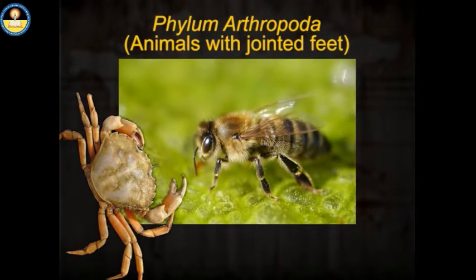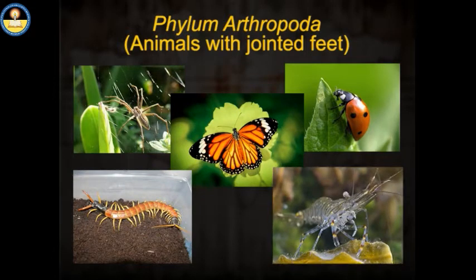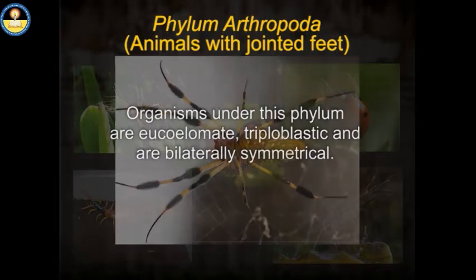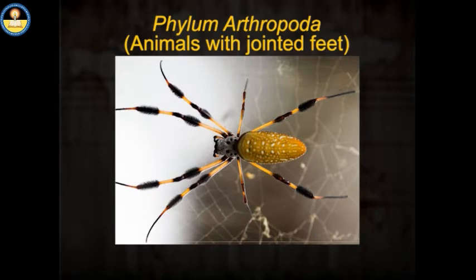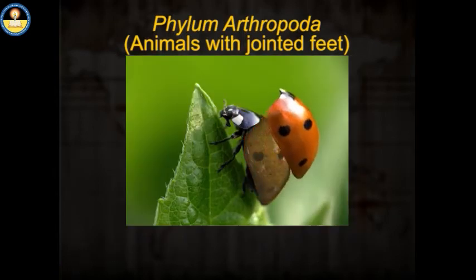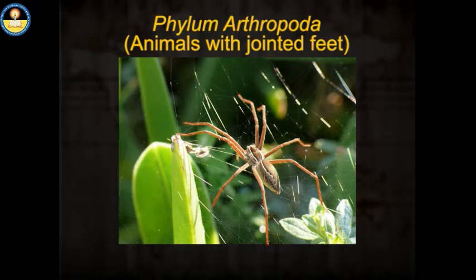Phylum Arthropoda — animals with jointed feet. This phylum has the maximum number of organisms, including spiders, insects, butterflies, centipedes, prawns, etc. Organisms under this phylum are eucoelomate, triploblastic and bilaterally symmetrical. The body is divided into two regions: cephalothorax (having head and thorax) and abdomen. The epidermis is covered by a strong glycoprotein called chitin. Paired and jointed appendages are present.